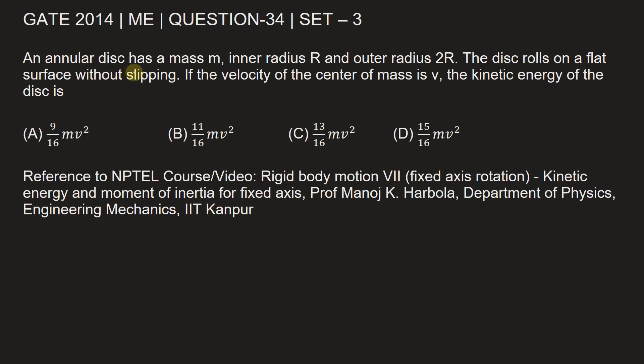An annular disc has a mass m, inner radius R and outer radius 2R. The disc rolls on a flat surface without slipping. If the velocity of the center of mass is v, the kinetic energy of the disc is?